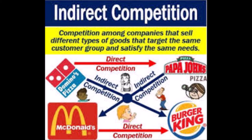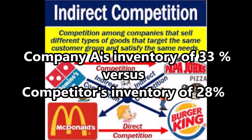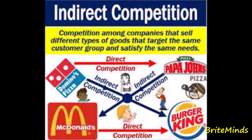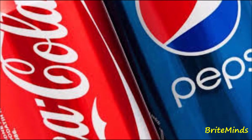Another example: one company's inventory might be 33% of total assets while a competitor's might be 28%. From these examples, which company is efficient in their operations? The small retailer with a cost of goods sold of 78% of total sales, or the larger retailer with a cost of goods sold of 80% of total sales?